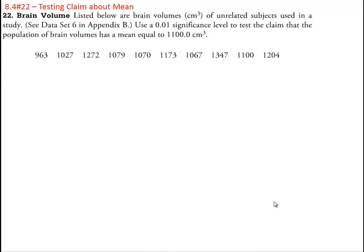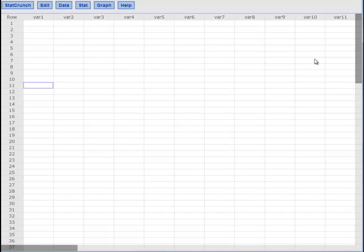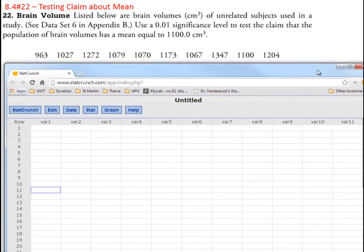Here we have brain volumes of just a random sample of subjects used in some sort of study. We are going to use a significance level of 0.01 to test the claim that the population of brain volumes has a mean equal to 1,100 centimeters cubed. All right, into technology we go.